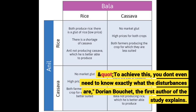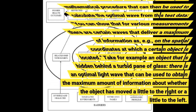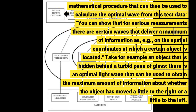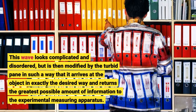To achieve this, you don't even need to know exactly what the disturbances are, Dorian Boucher, the first author of the study, explains. It's enough to first send a set of trial waves through the system to study how they are changed by the system. The scientists jointly developed a mathematical procedure to calculate the optimal wave from this test data. This wave looks complicated and disordered, but is then modified by the turbid medium in such a way that it arrives at the object in exactly the desired way and returns the greatest possible amount of information to the experimental measuring apparatus.